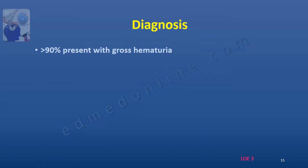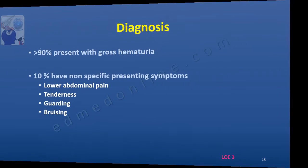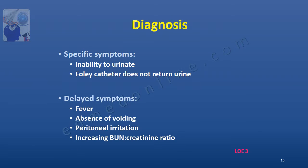The diagnosis should strike the clinician if gross hematuria is seen, especially because 90 percent of patients tend to present with it. Ten percent of patients may have non-specific symptoms in the form of lower abdominal pain, tenderness, guarding, or bruising seen suprapubically. Inability to urinate and on catheterization only frank blood coming out are specific symptoms suggesting bladder injury. If there is a delay in diagnosis, symptoms could result from extravasation causing peritoneal irritation, paralytic ileus, and later infection presenting as fever.